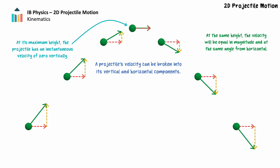As with one-dimensional projectiles, the instantaneous vertical velocity of a two-dimensional projectile is zero at its highest point. So how do we break the projectile's velocity into its components? Provided we know the velocity and the angle, we can find the horizontal velocity using v cosine theta, and the vertical velocity using v sine theta.